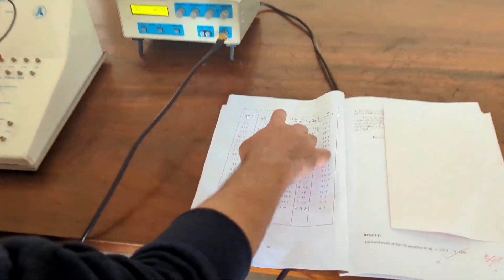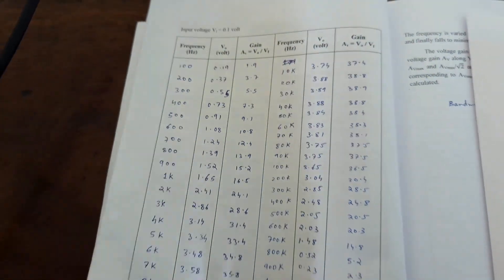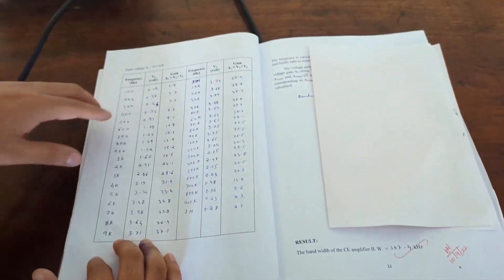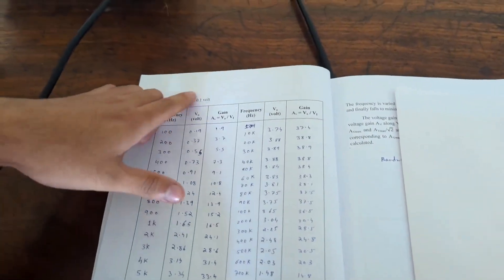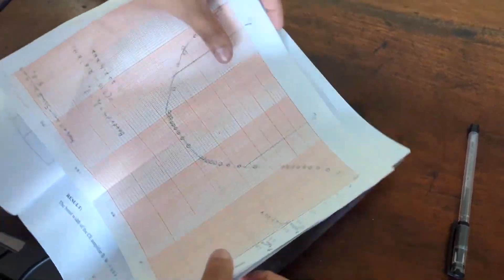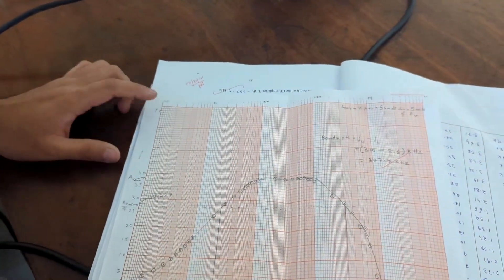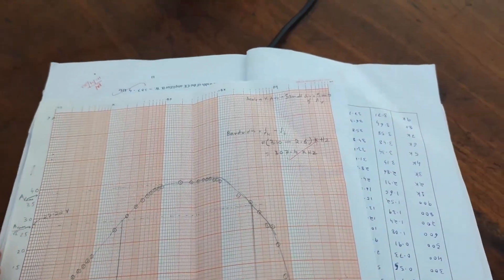You get the output voltage. Then AV gain will be V output by V input. Input we already set it to 0.1 volt before. It was here. So you divide V0 by Vin. That is V1. So you get gain. So in the graph, it's similar to CC amplifier. In the graph, you take the gain in the Y axis and the frequency in the X axis.